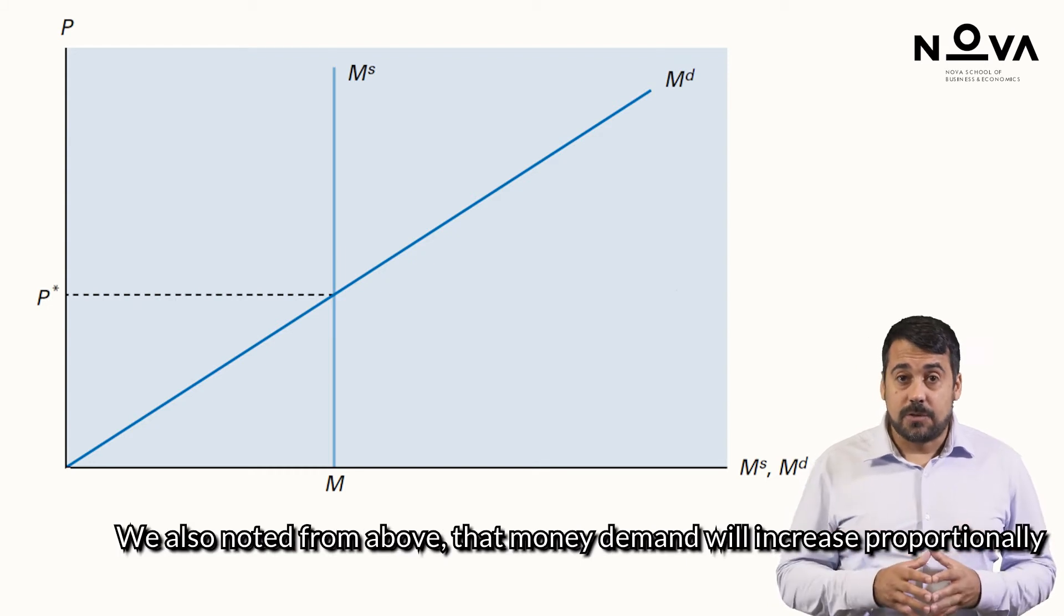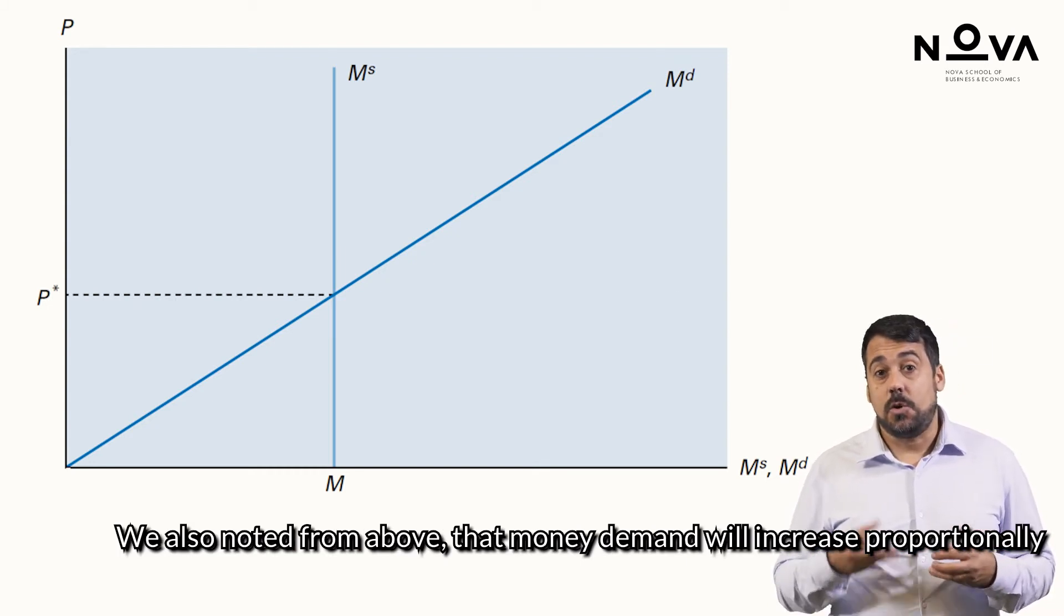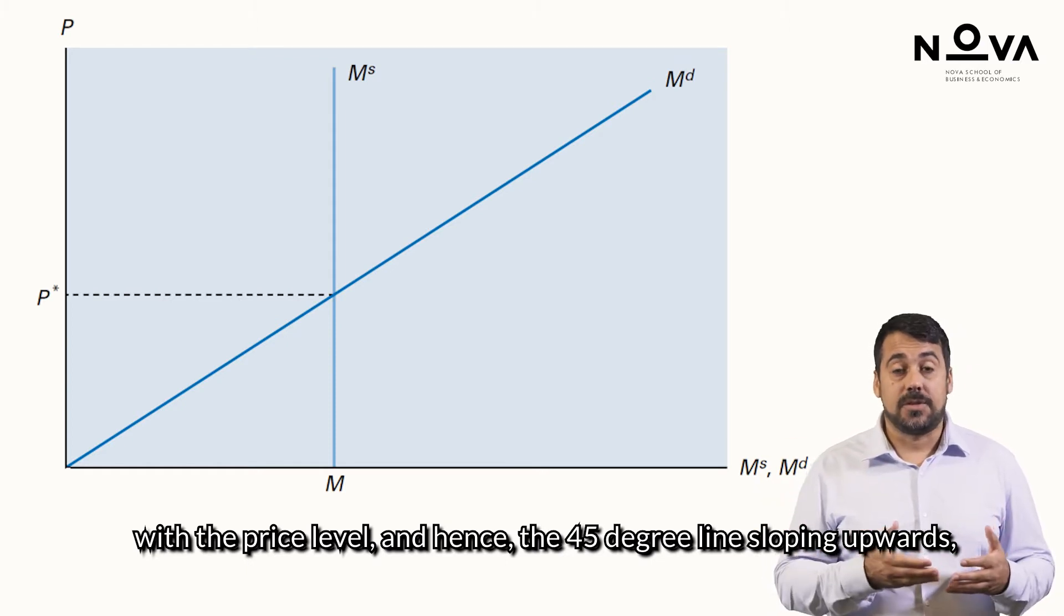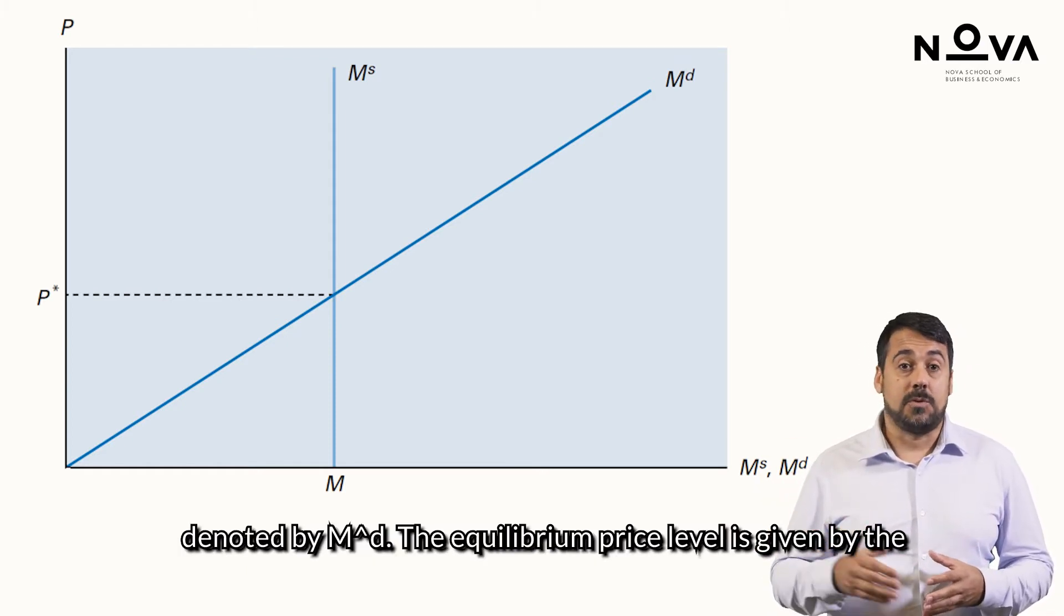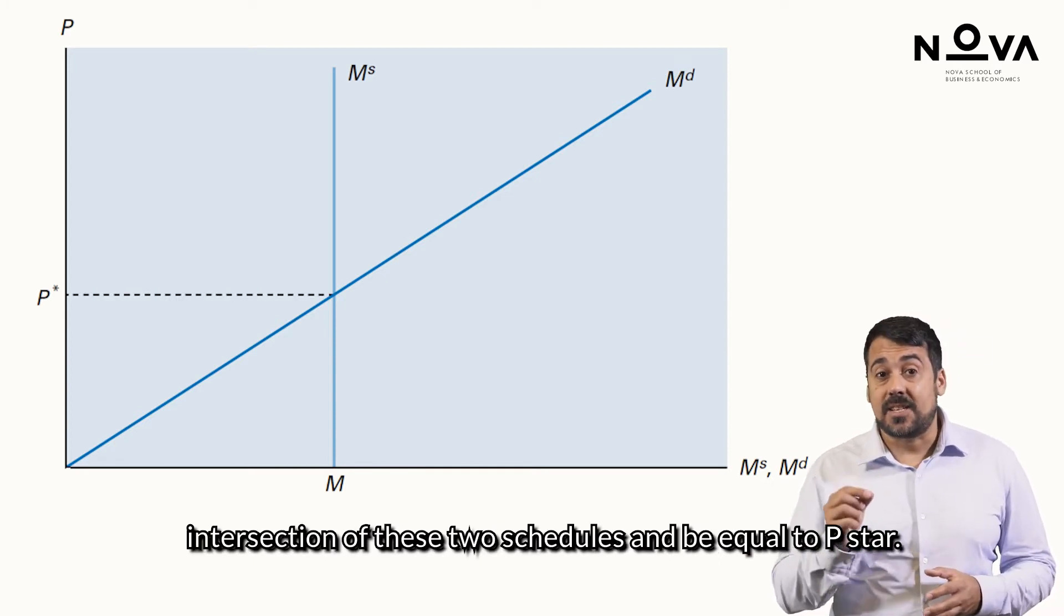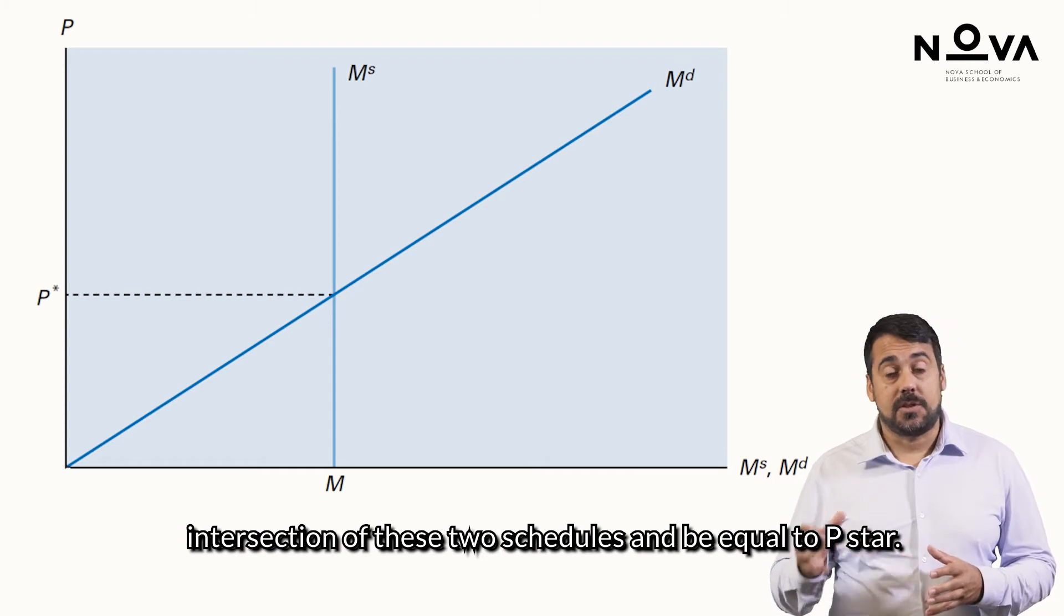We also noted from above that money demand will increase proportionally with the price level, and hence the 45 degree line sloping upwards, denoted by M superscript D. The equilibrium price level is given by the intersection of these two schedules, and be equal to P star.